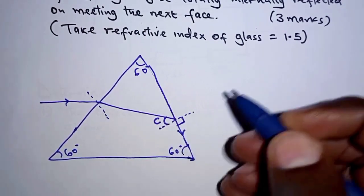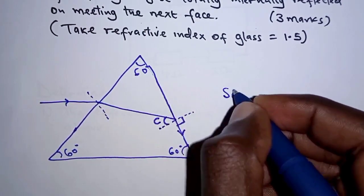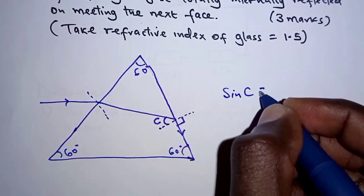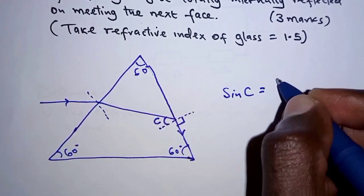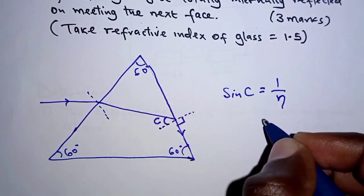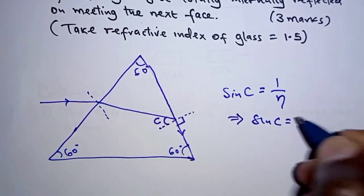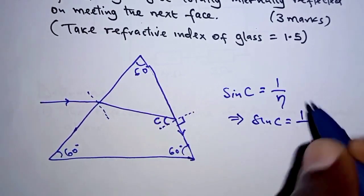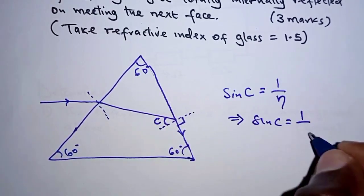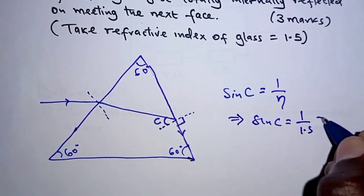Now from this we are going to calculate the critical angle of glass. We know that sine of the critical angle is equal to 1 over the refractive index. And this implies that sine c equals 1 over 1.5, which is 2 over 3.